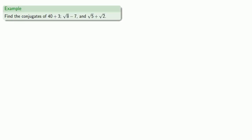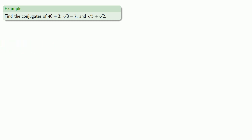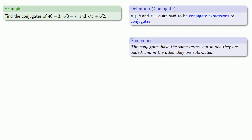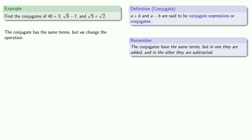For example, let's find the conjugates of: 40 plus 3, square root of 8 minus 7, and square root of 5 plus square root of 2. The conjugate will have the same terms but we change whatever the operation is. So the conjugate of 40 plus 3 has the same terms — 40 and 3 — but since we're adding here, we'll subtract in the conjugate: 40 minus 3.